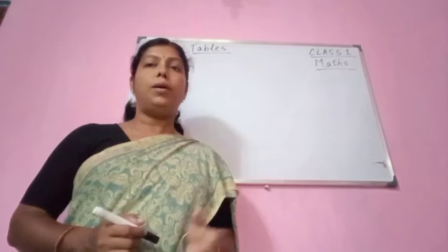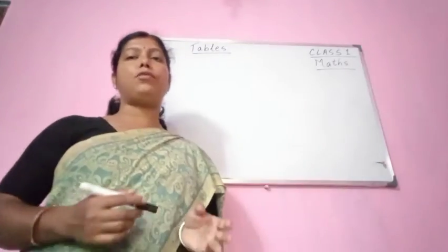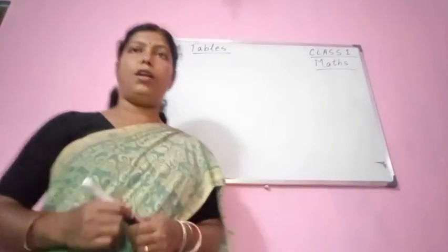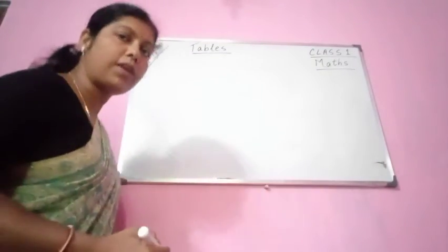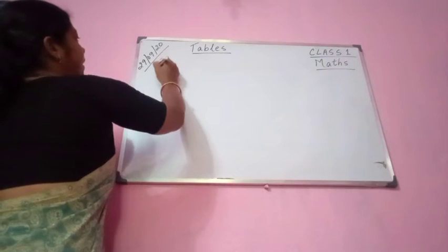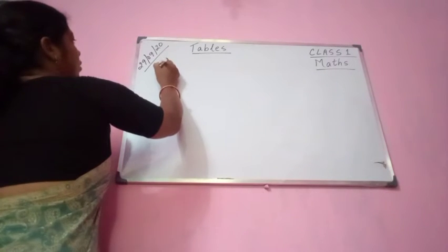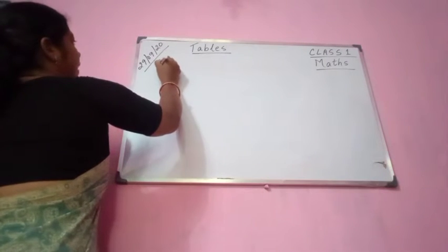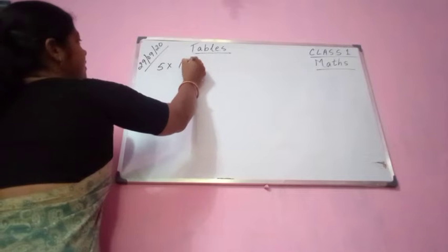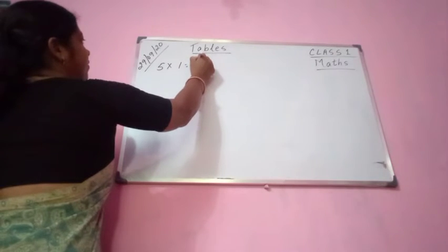Please see the board and write down. So first part: table of 5. 5 ones are 5.